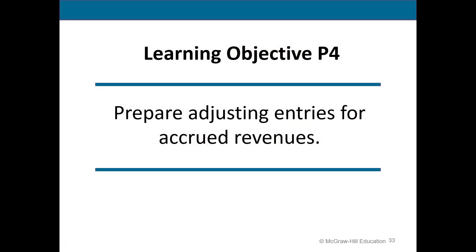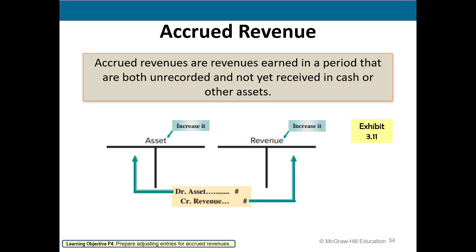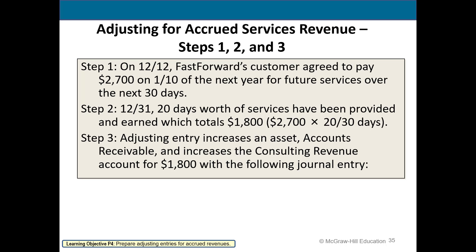Accrued revenues are revenues earned that are unrecorded and not yet received. For example, a customer will pay $2,700 on January 10th next year. We have earned $1,800 of the $2,700 — representing 20 days of the 30 days — so we do an adjusting entry to increase accounts receivable and increase our revenue for $1,800.